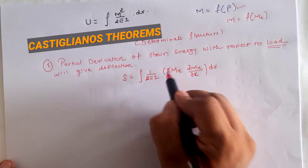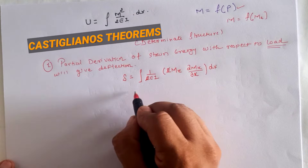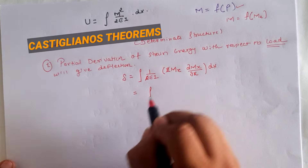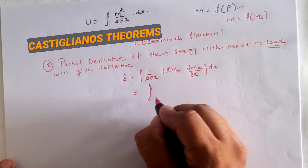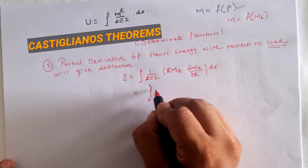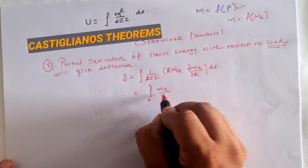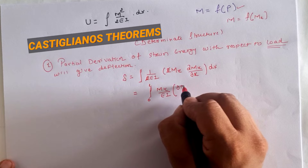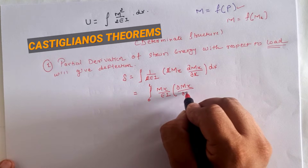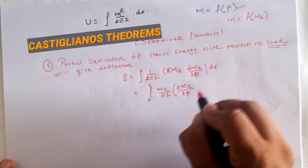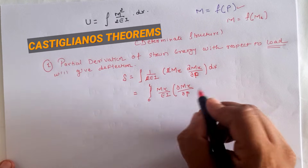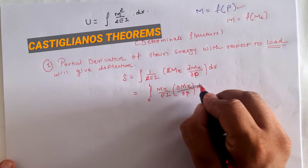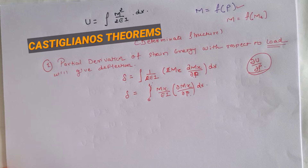After cancelling the factor of 2, the deflection equation becomes δ = ∫₀ᴸ (Mₓ/EI)·(∂Mₓ/∂P)·dx, integrating over the entire section from 0 to L. Similarly, for the second statement, which is for rotation or slope, we partially derivate the strain energy with respect to moment.